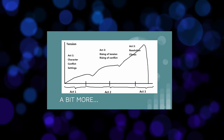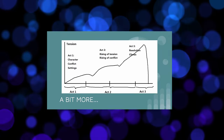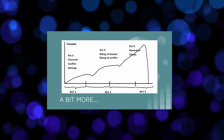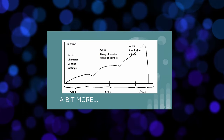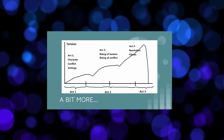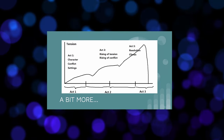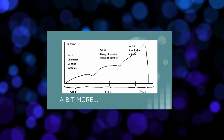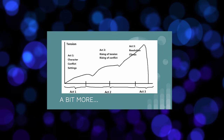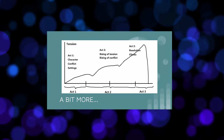In act one we've got the characters being set up, the conflict being set up, everything being established. Act two is where the tension and the conflict rises after we've had that all-important inciting incident. Act three is where we have the resolution and the climax of the story. This is a slightly better diagram because the other diagram makes it look like everything takes up equal parts of the story, but usually act two is the really big part.